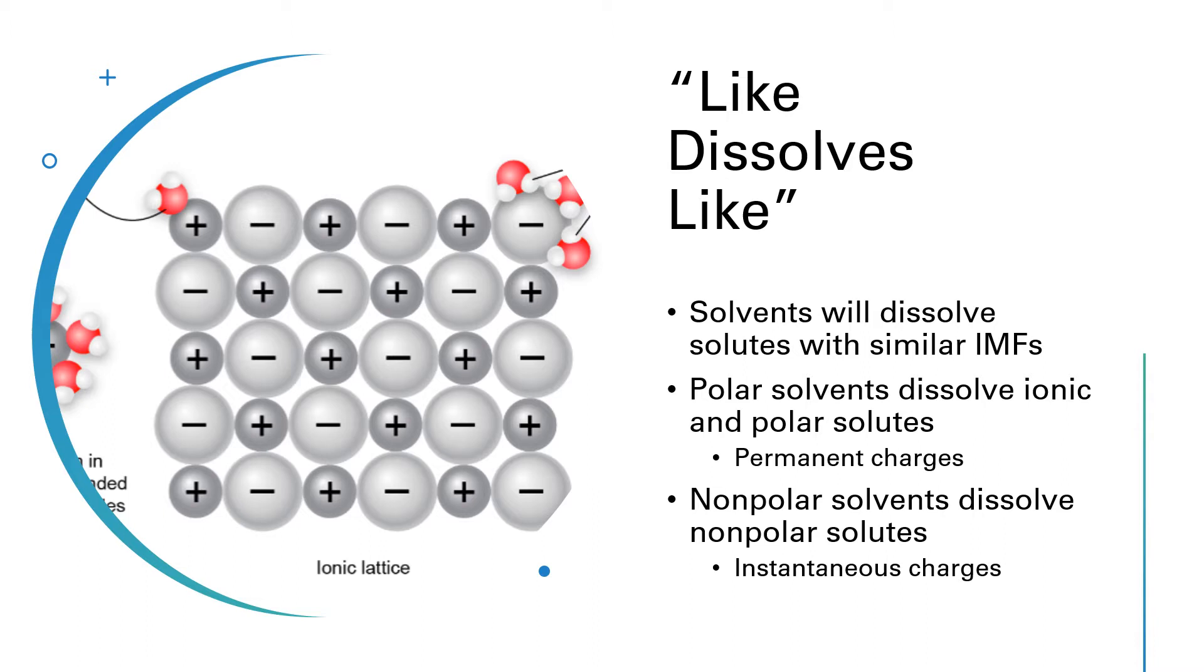For instance, polar solvents will dissolve ionic and polar solutes. Ionic substances and polar substances have permanent charges on them. So if you have permanent charges on your molecules, then the solvent and the solute will dissolve in one another.